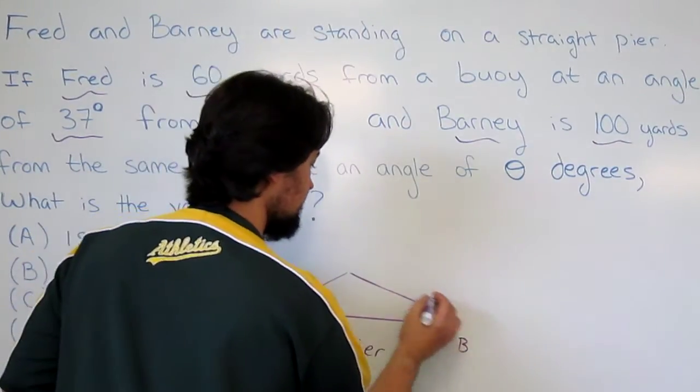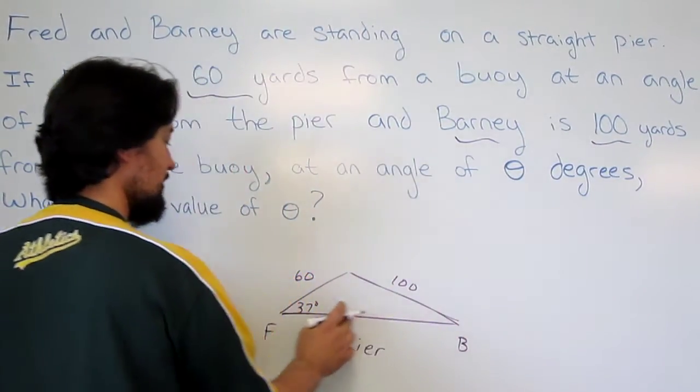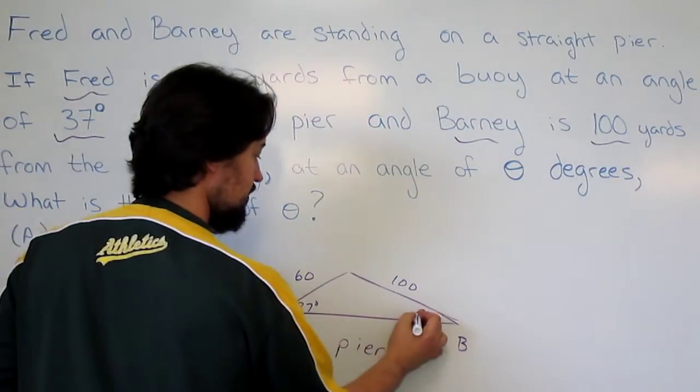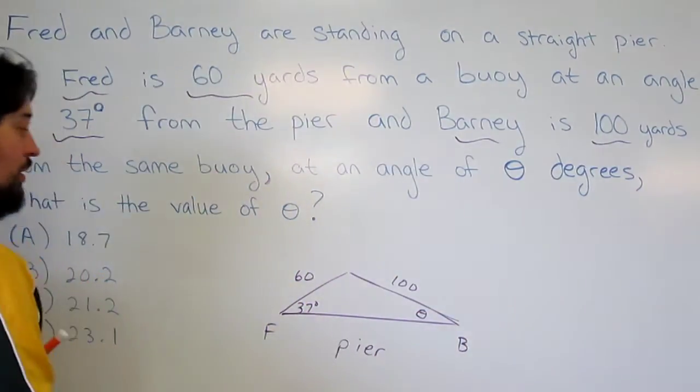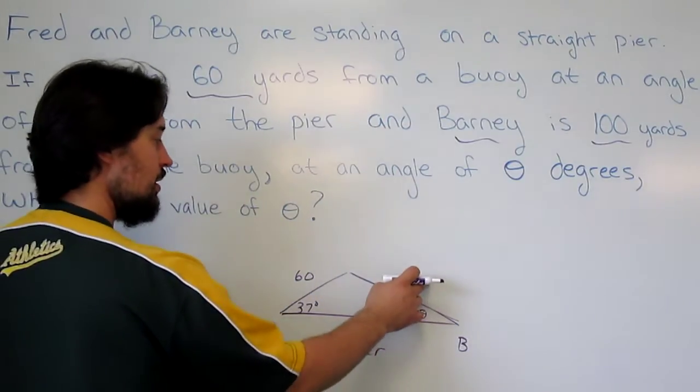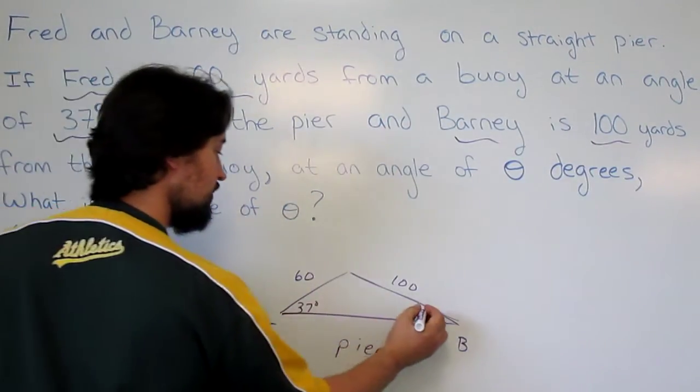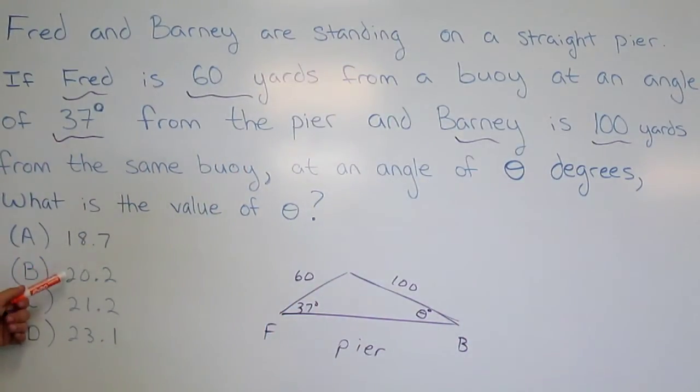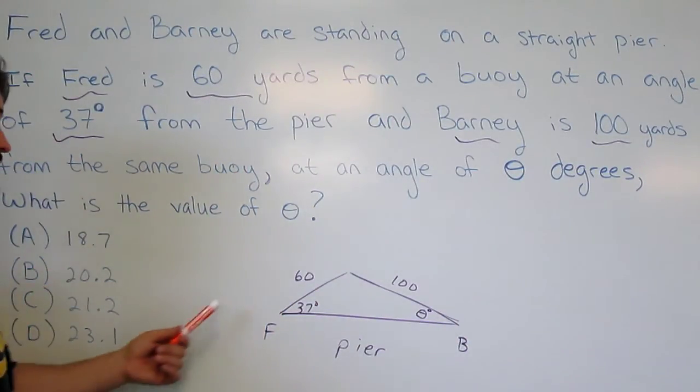What do we notice? Looks like this angle is going to be smaller. In fact, it must be. Why? Well, it's opposite a smaller side. Opposite a larger side is a larger angle. So it makes sense that all of our answers are substantially smaller than 37.